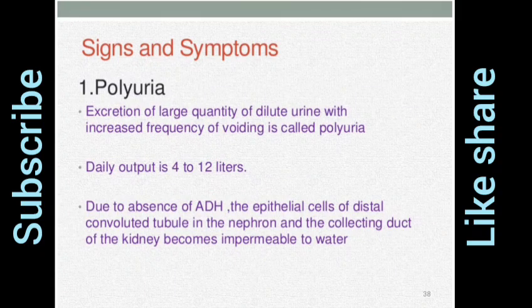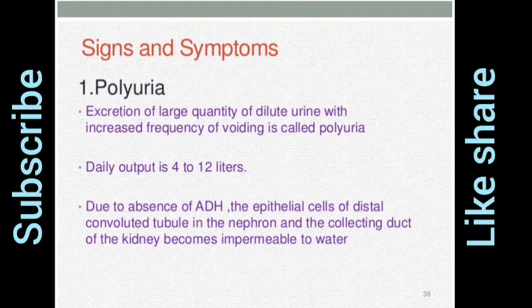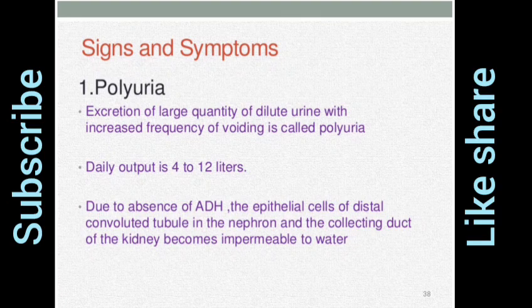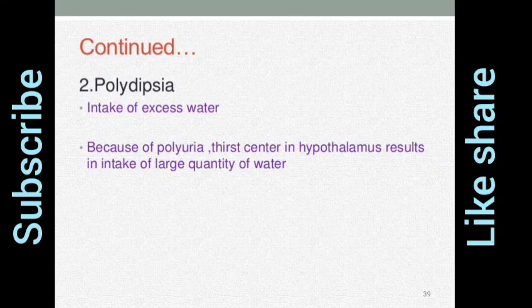Signs and symptoms: polyuria — creation of large quantities of dilute urine with increased frequency of urination — is called polyuria. Daily output is 4 to 12 liters. Due to absence of ADH, the epithelial cells of the distal convoluted tubule in the nephron and the collecting duct of the kidney become impermeable to water. Polydipsia — intake of excessive water — occurs because of polyuria; thirst centered in the hypothalamus results in intake of large quantities of water.